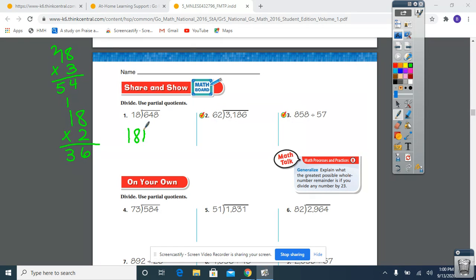54 is looking like as close as I can get, because if I tried 18 times 4, that would go over 64. So 3 works. I like to rewrite my problem. We were talking about 64, so that 3 is going to go above the 4. 3 times 18 was 54. Now I'm going to subtract, and now I'm going to check. Is 10 smaller than 18? It is. And I'm going to bring down my 8.